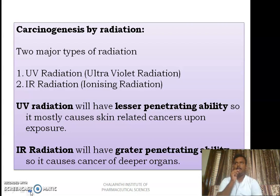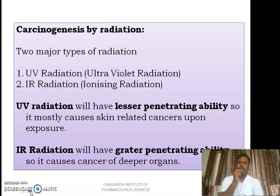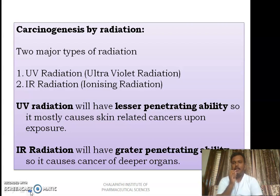Radiation carcinogens are one of the most important things we are going to discuss in this lecture. We have two major types of radiation carcinogens: one is UV radiation, ultraviolet radiation, and the other is IR radiation, ionizing radiation.